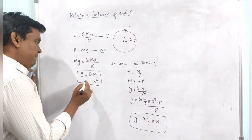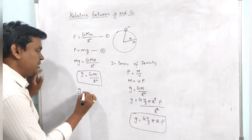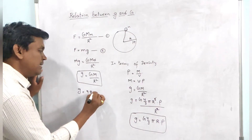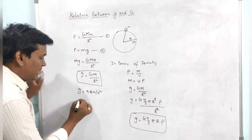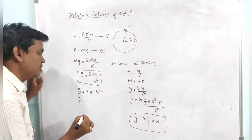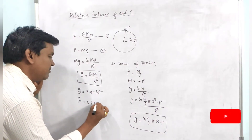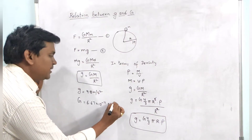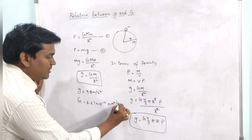The magnitude of small g is 9.8 meters per second square. And the magnitude of capital G is 6.67 into 10 to the power of minus 11 newton meter square per kg square.